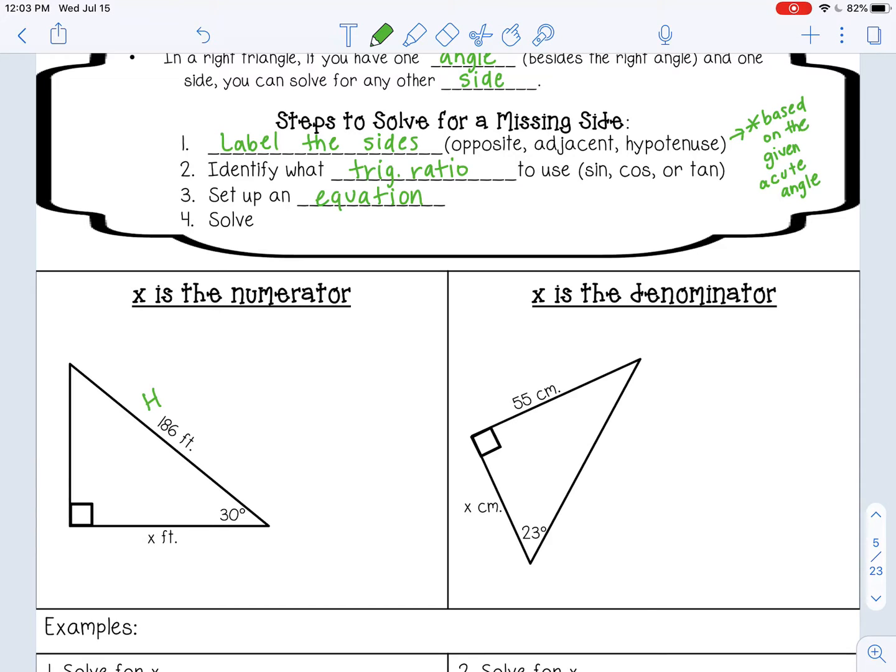Then you use the acute angle that you are given - in this case 30 - to label the other two sides. Opposite would be across from it. Adjacent is going to be right next to it. Now, you don't actually need all three sides, you only need the two sides that have a value on them. Notice the opposite side doesn't have anything written on it, so you really don't need to label that.